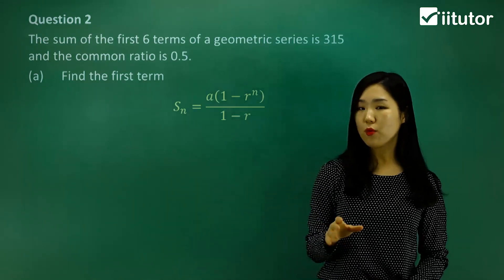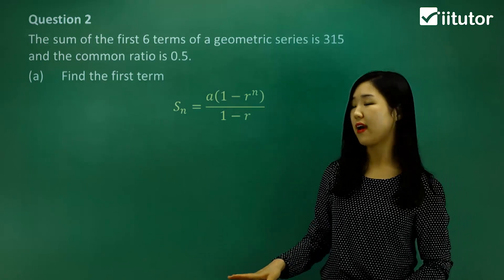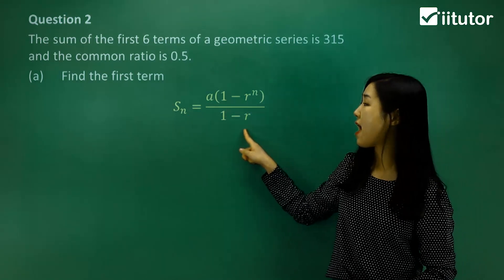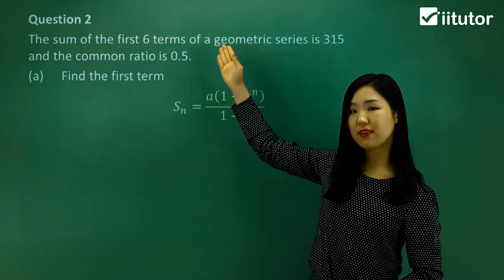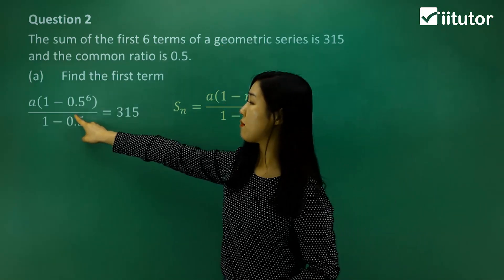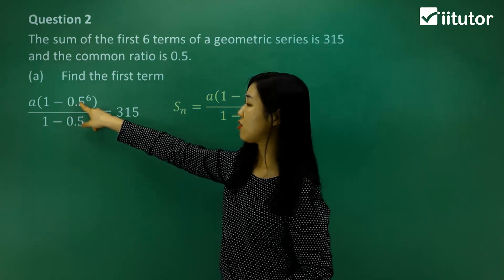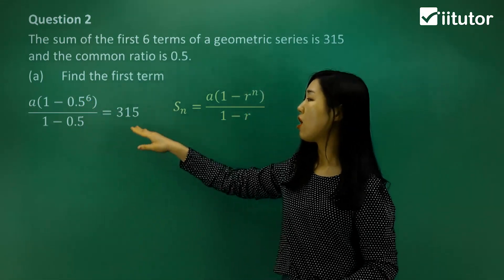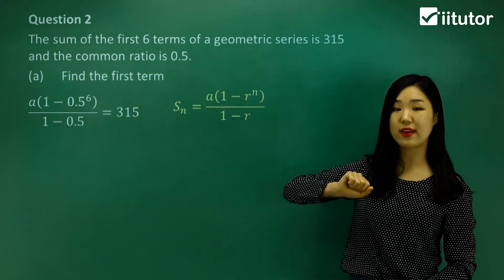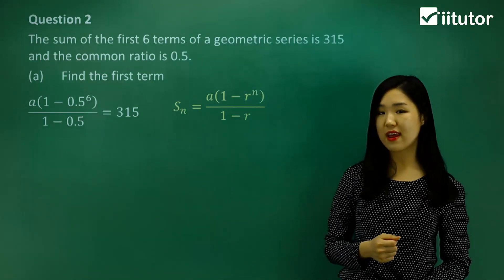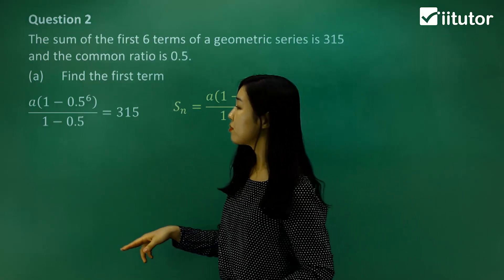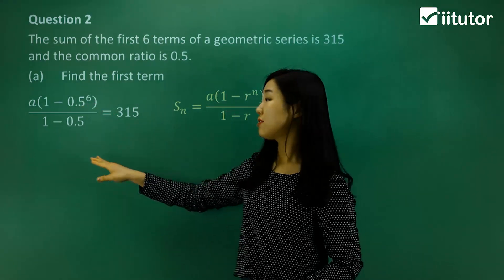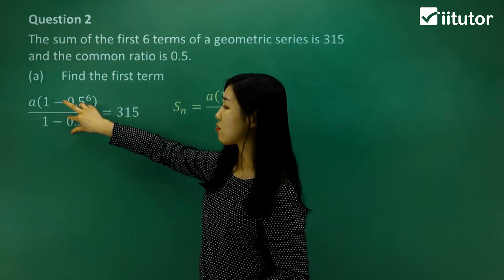But anyway, we don't know what the first term is. That's what we want to find. The common ratio r will be 0.5. And n, we're going to be using 6. So see how I did 1 minus the 0.5, the common ratio to the power of 6. And again, 1 minus 0.5 in the denominator. Because see how that sum is equal to 315. So now we can find a by using our algebra. Now to get rid of fractions, we multiply by the reciprocal.